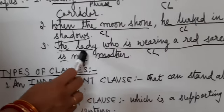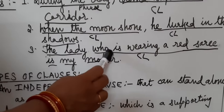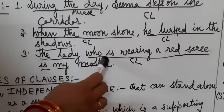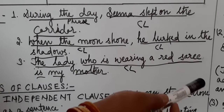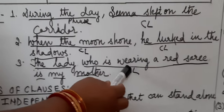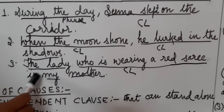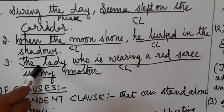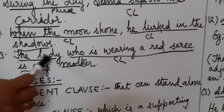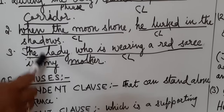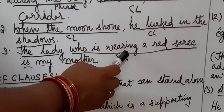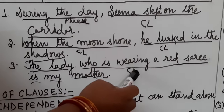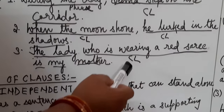If we don't write the independent clause, this dependent clause cannot stand alone. 'Who is wearing a red sari' — meaning adhura hai. So this is a dependent clause. 'The lady is my mother' — this is an independent clause. Both are clauses because both portions have subject and verb. Jo poora meaning deta hai wo independent clause hai, jo meaning adhura hai wo dependent clause hai.